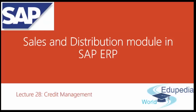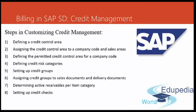We will talk about credit master records later, but first we will talk about customization of credit management in SAP ERP system. The customization steps include: defining a credit control area; assigning the credit control area to a company code and sales areas; defining the permitted credit control area for a company code; defining credit risk categories; setting up credit groups; assigning credit groups to sales documents and delivery documents; determining active receivables per item category; and setting up credit checks.